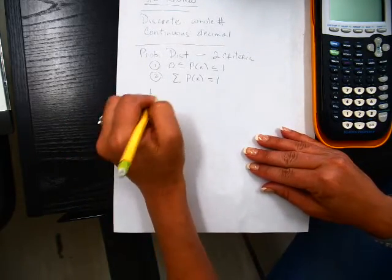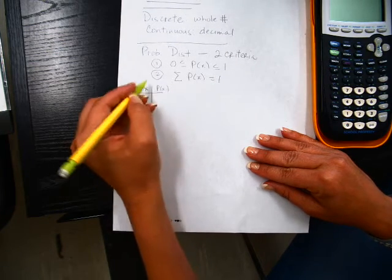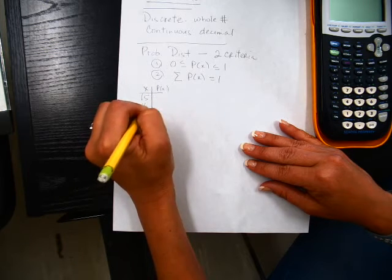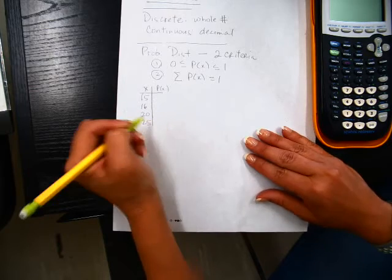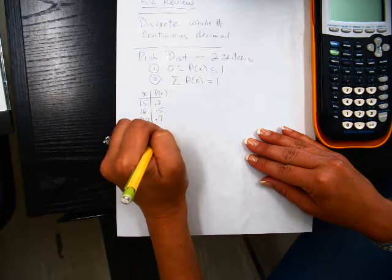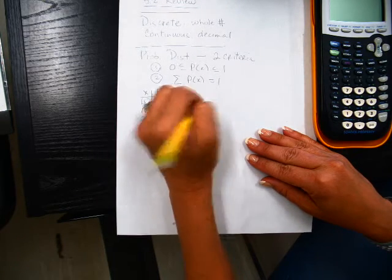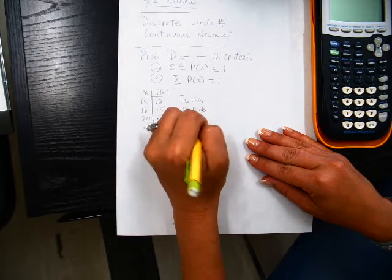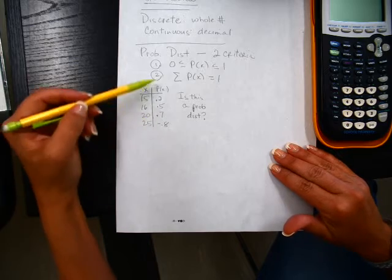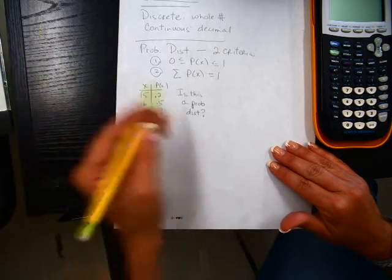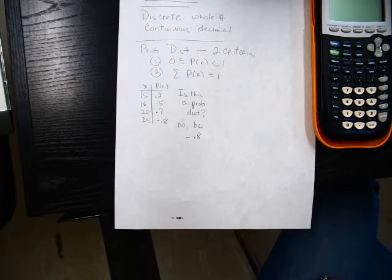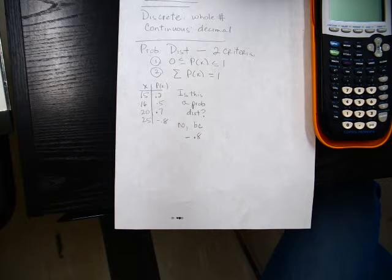So here's an example. I've got x and I have my probabilities. So these are going to be my random variables. This is 15, 16, 20, and 25. So this is 0.2, 0.5, 0.7, and negative 0.8. So the question is, is this a probability distribution? It was yes or no. And if no, which one of these criteria failed? So as you look down through all of these, are all of these numbers in between 0 and 1? So the answer is no. This is no because negative 0.8. So that's all you have to do. None of these were hard. None of these required a whole lot of work.